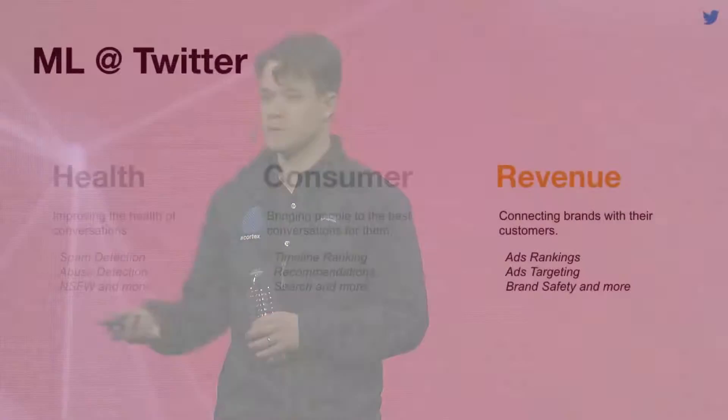The third job to be done for our customers is helping connect brands with their customers — you might think of this as the ads product. This is actually the OG of machine learning at Twitter, the first team that implemented it. Here we use it for ads ranking, which is similar to timeline ranking but for ads, identifying the most relevant ads for our users. As signals going into that, we also do user targeting to understand your past engagement with ads and which ads are in your interest space.